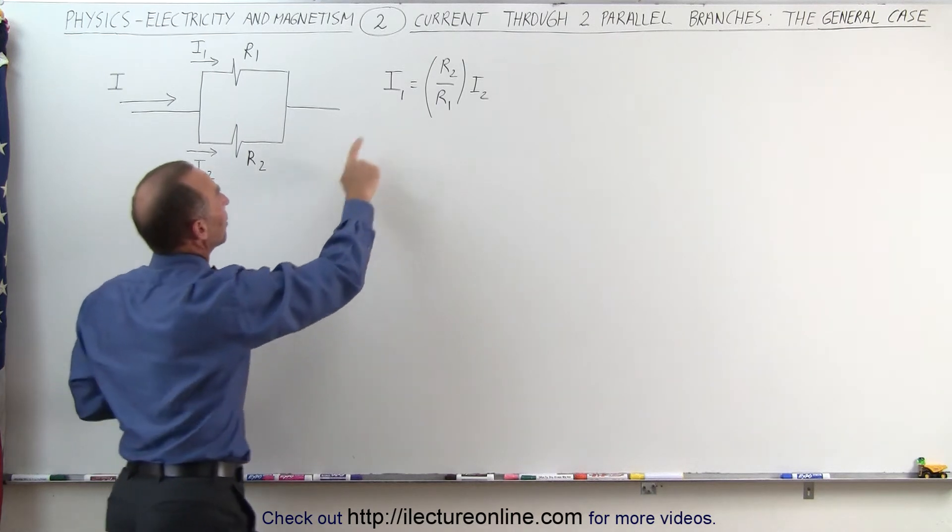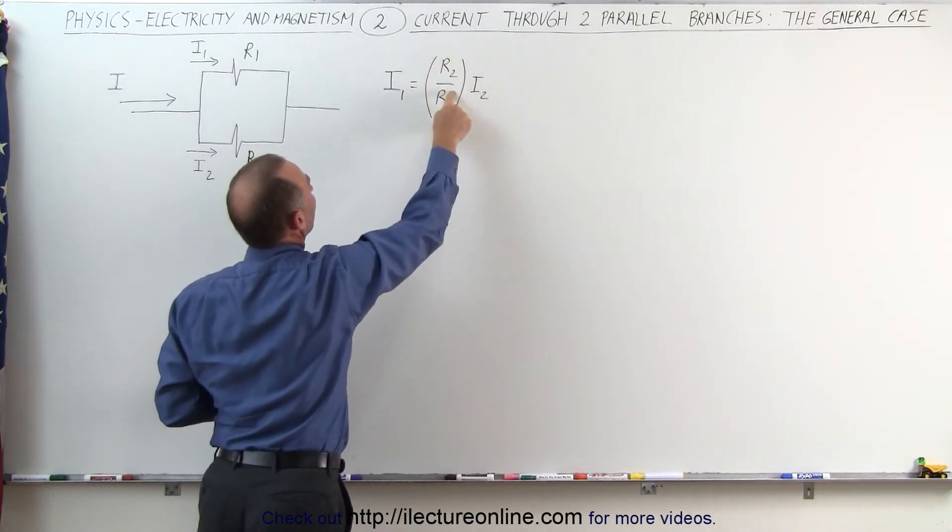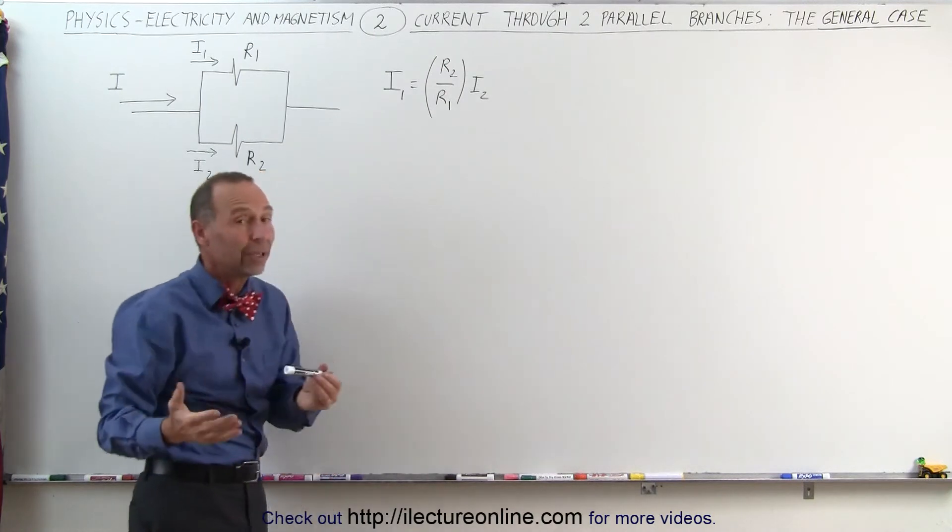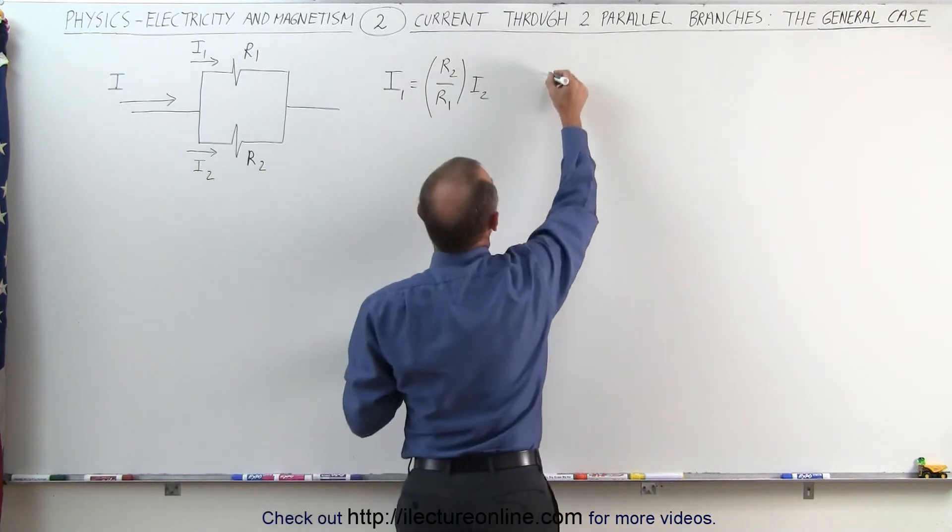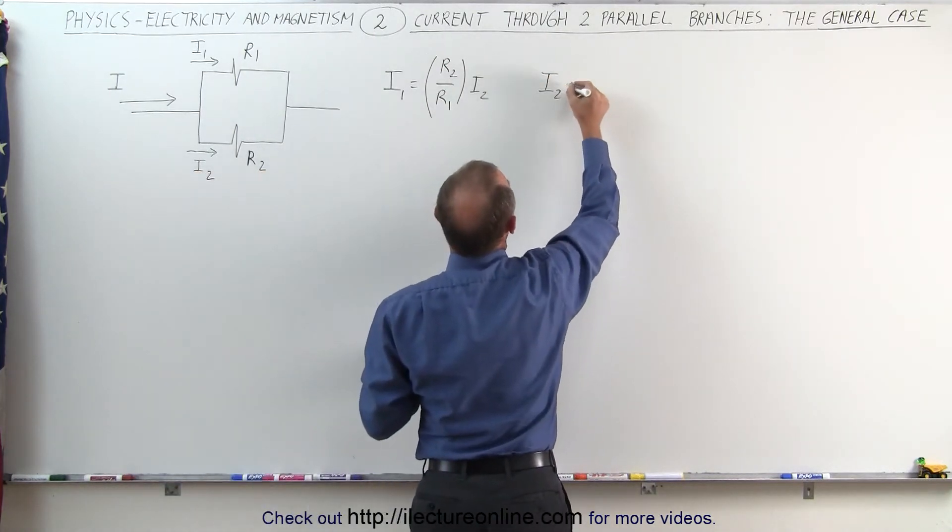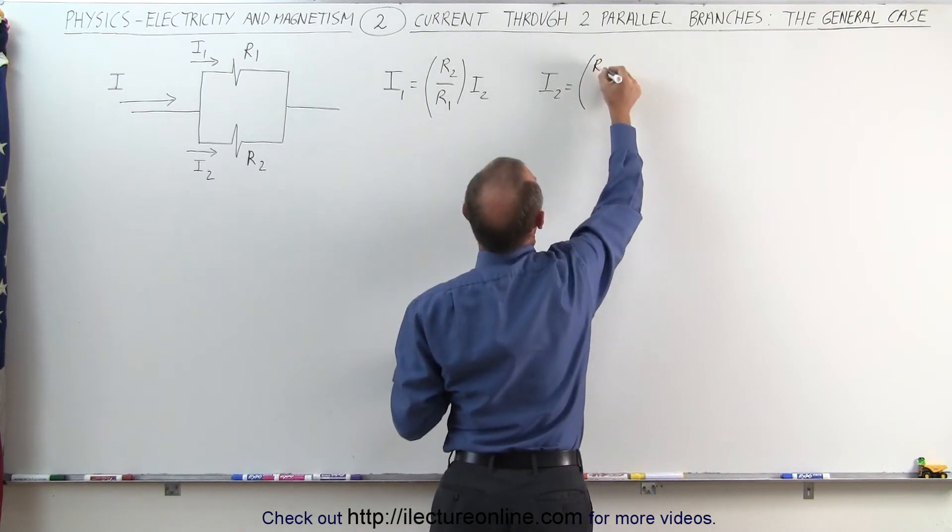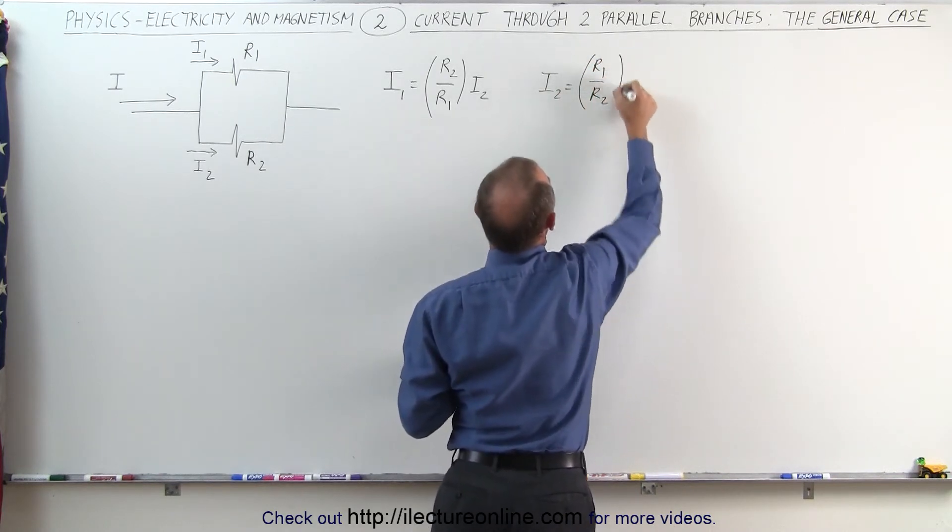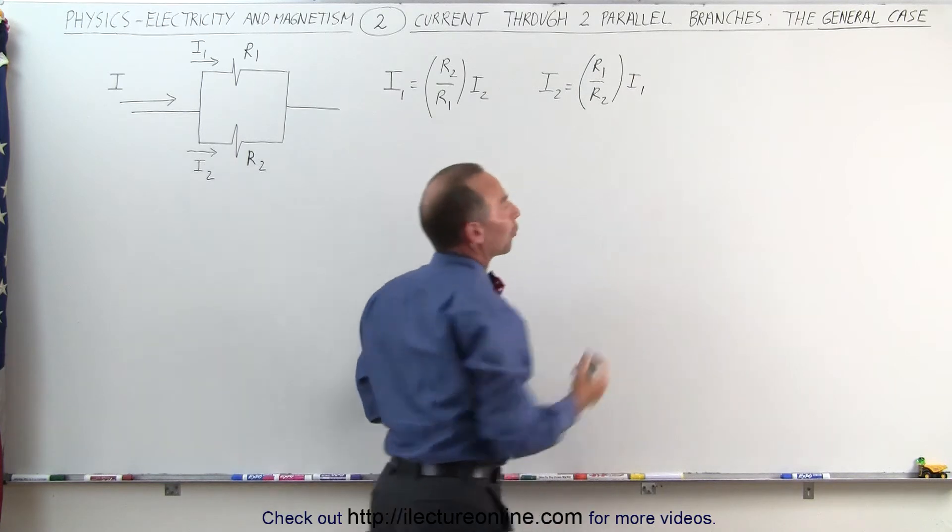In other words, you can see that I1 will be the ratio of R2 over R1 times I2. And likewise, we can say that I2 can be written as the ratio of R1 over R2 times I1. It goes, of course, both directions.